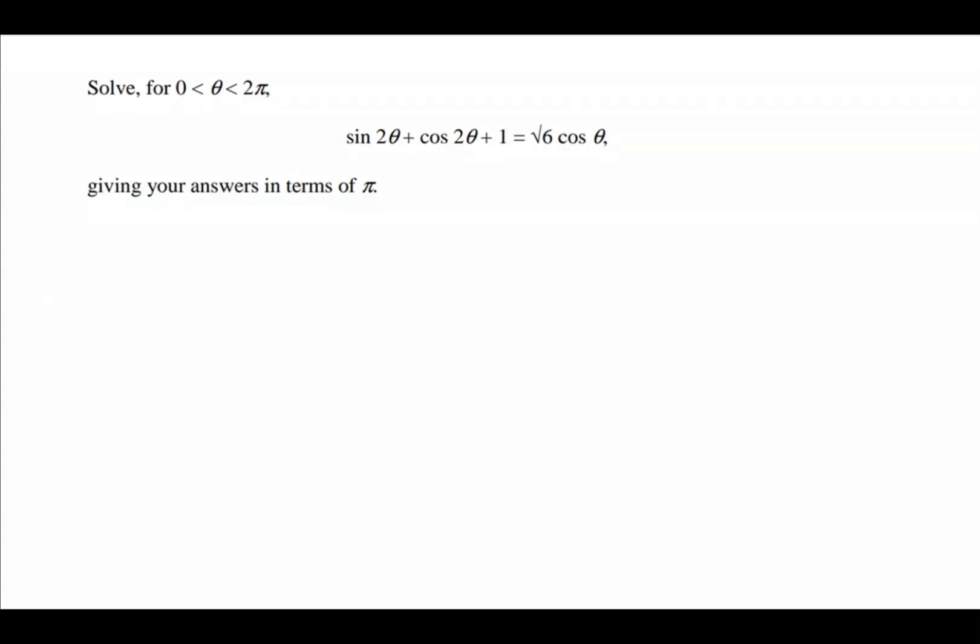Solve for theta, where theta is between 0 and 2 pi. Sine 2 theta plus cos 2 theta plus 1 is equal to root 6 cos theta, giving your answers in terms of pi.